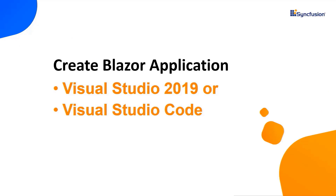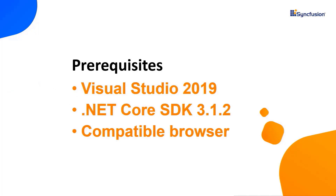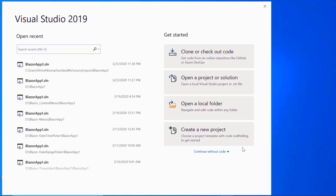Let me start with the application creation process. I can create Blazor applications either using Visual Studio 2019 or Visual Studio Code. In this video, I'll show you how to create a server-side Blazor application using Visual Studio 2019. Make sure that you have installed it along with the .NET Core SDK version 3.1.2. Now open Visual Studio 2019 and choose Create a New Project from the dashboard.